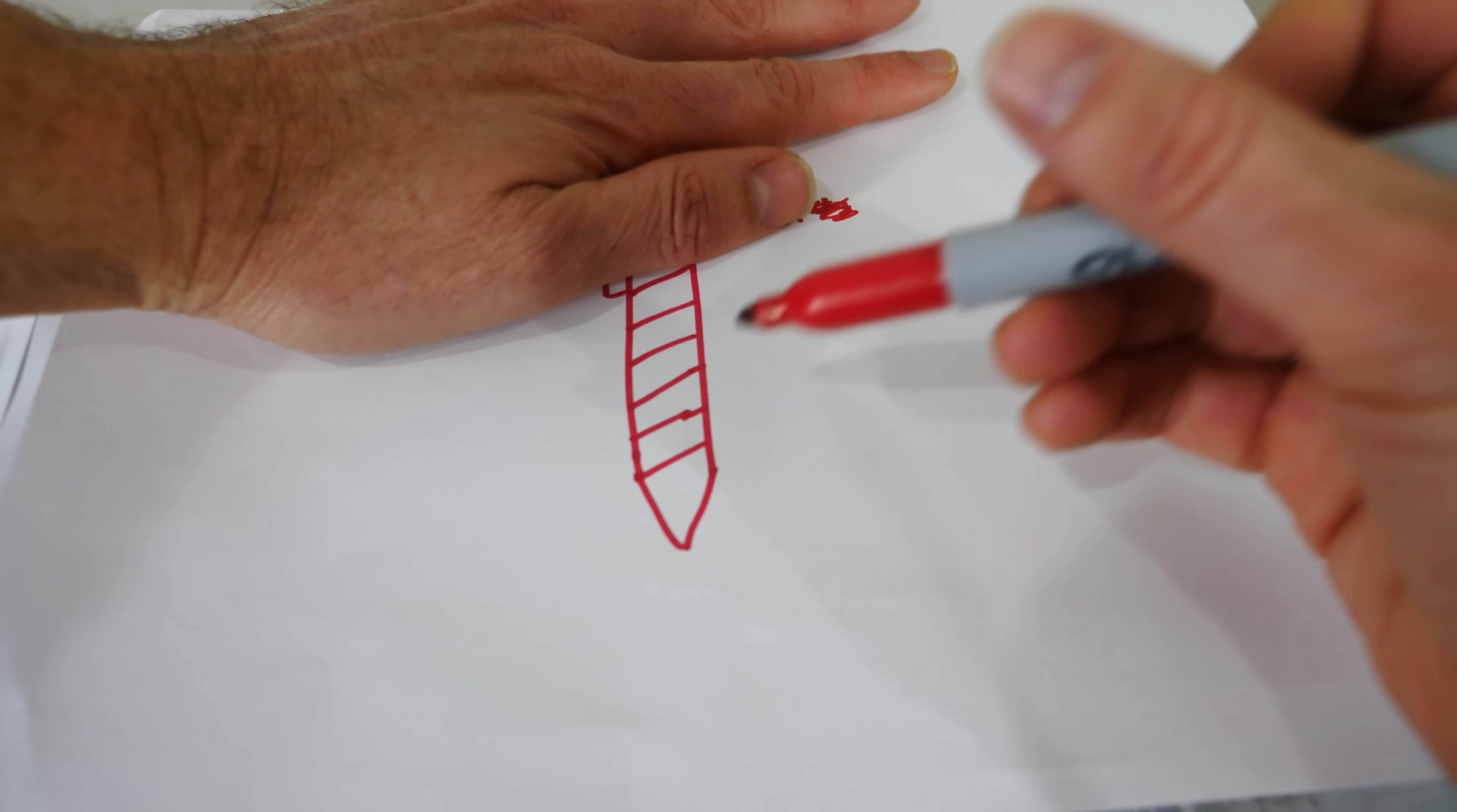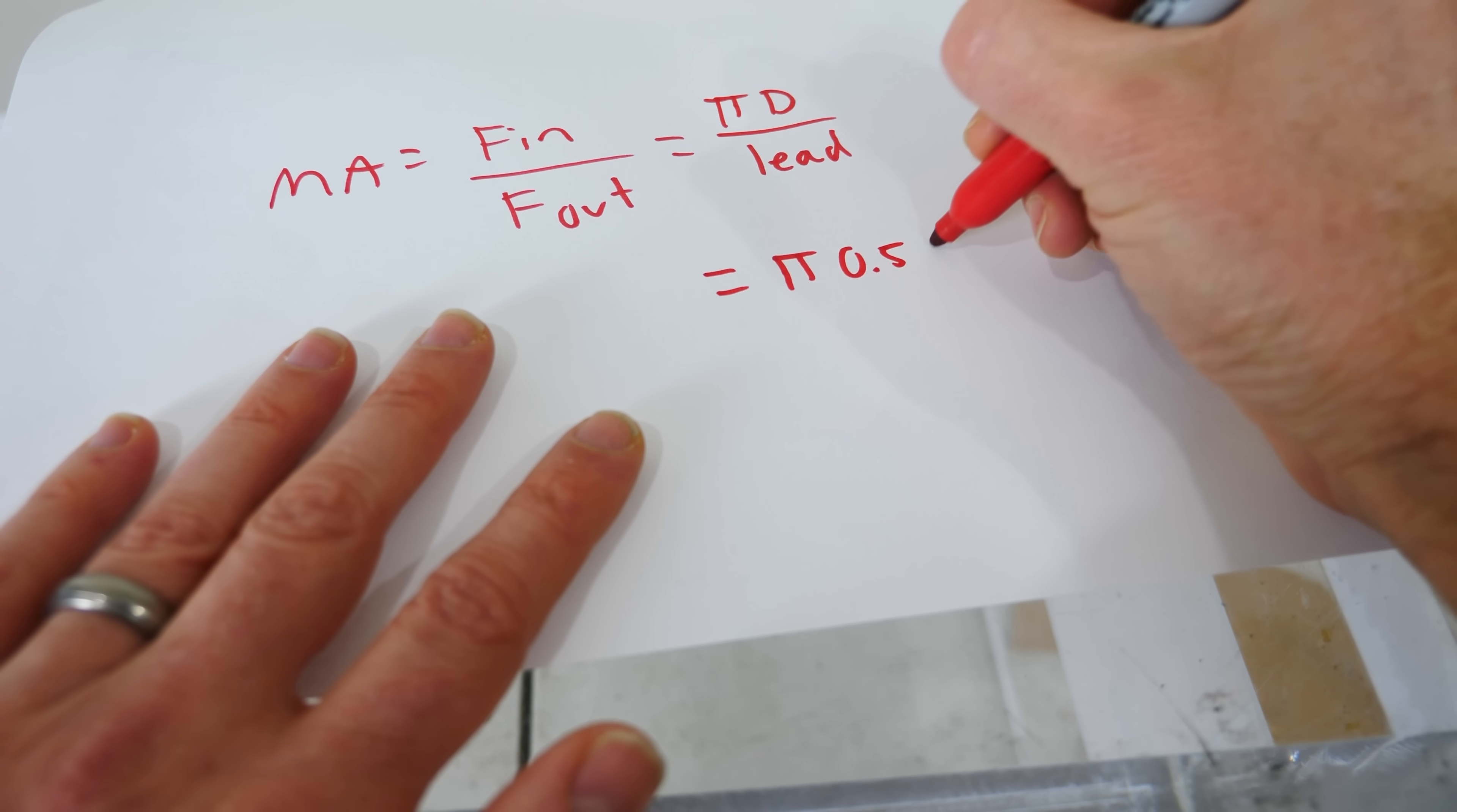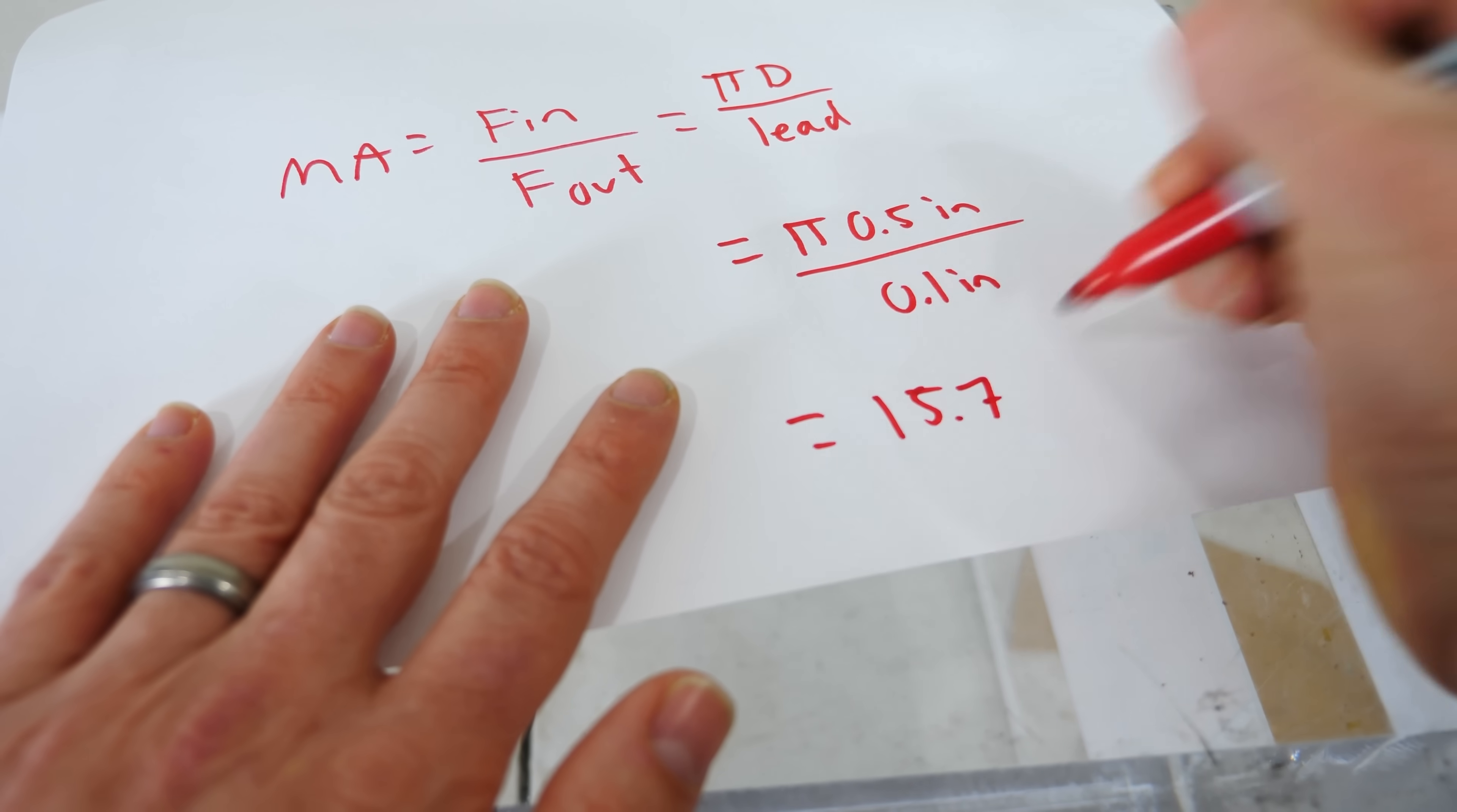The lead in the screw, for example, is just the distance between two adjacent threads. So let's say I had a screw that was a half an inch in diameter and then the lead was 0.1 inches. That means I'd get a mechanical advantage of 15, 15.7.